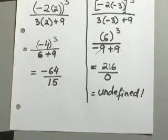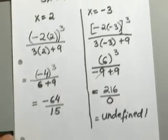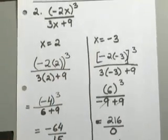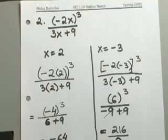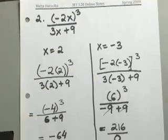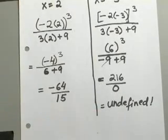Anytime you end up with an undefined answer, that tells us that this value is not good. So X equals negative 3 for this expression, negative 2X quantity to the third over 3X plus 9, you cannot use negative 3 to find the value of this expression, because when you do, you end up with an undefined answer right there.